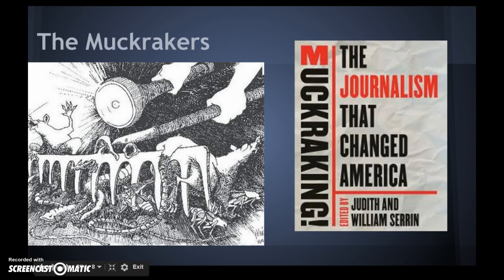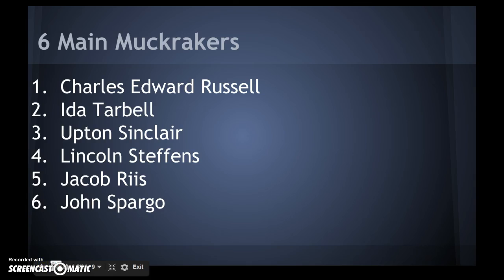Our first muckraker: Charles Edward Russell — he went after the meat industry in Everybody's Magazine and McClure's magazine. Ida Tarbell exposed the Standard Oil Company and their corruption and monopoly. Third is Upton Sinclair — he wrote The Jungle and exposed the sausage industry. We're going to actually read an excerpt from The Jungle, so get ready.